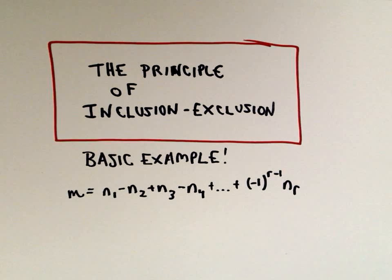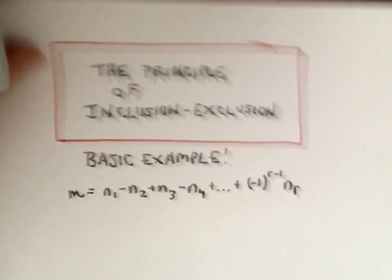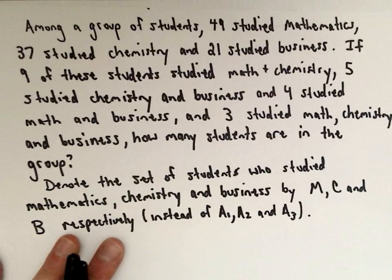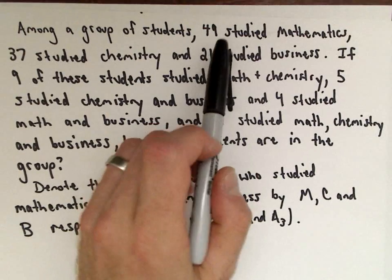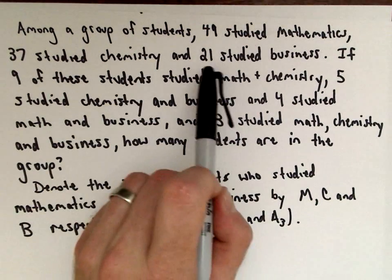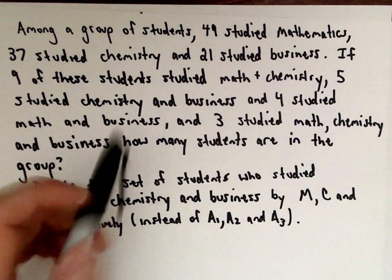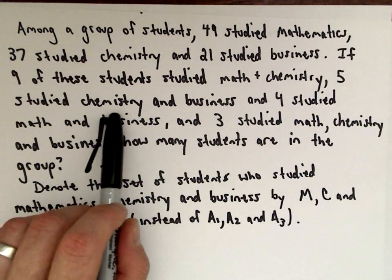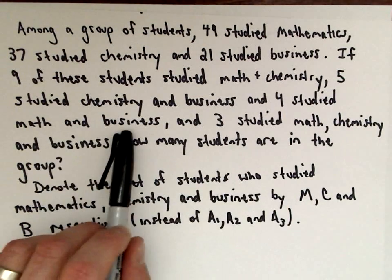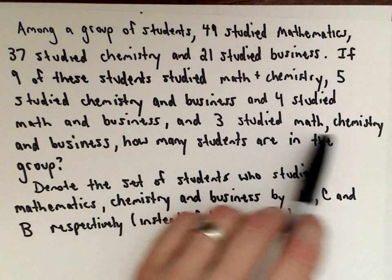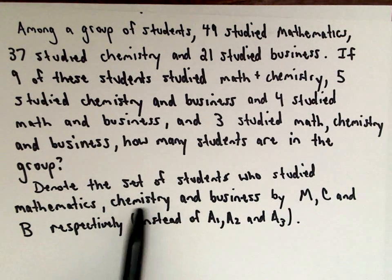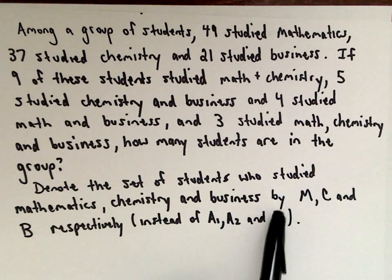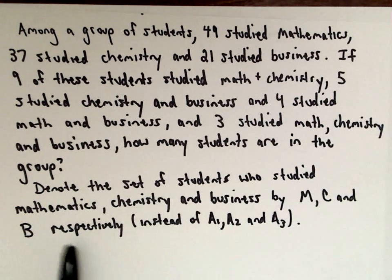In this case, we're going to deal with three sets, and in the next example we're going to look at four sets. So, among a group of students, 49 studied Mathematics, 37 studied Chemistry, and 21 studied Business. Nine of these students studied Math and Chemistry, five studied Chemistry and Business, four studied Math and Business, and three studied all three subjects. We want to know how many students are in the group. We'll denote the sets using M for Mathematics, C for Chemistry, and B for Business.